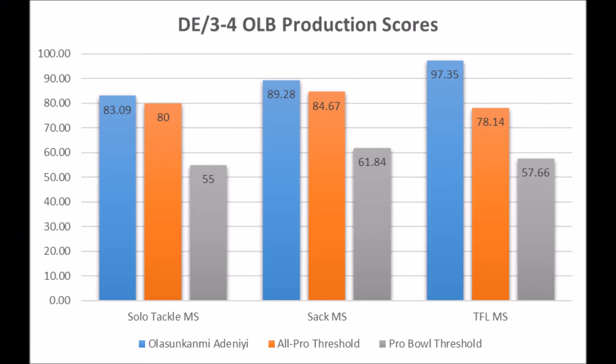So that's the basics of what defensive market share is and the importance of it. Let's look at his production profile — this is why I wanted to bring this guy out here, because based on my data he pretty much hits every single minimum threshold for all-pro potential and pro bowl potential. It is important to note that he did play at Toledo, so there is a question mark because of strength of schedule. But despite that, this is still very good production: 83.09 out of 100 in terms of solo tackle data, 89.28 in terms of sack data, and 97.35 in terms of tackle for loss data.